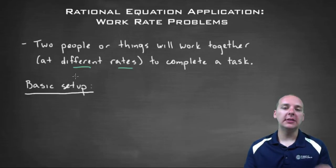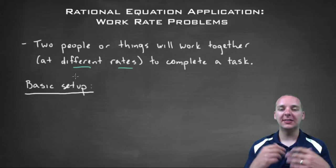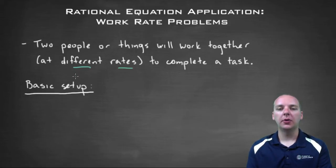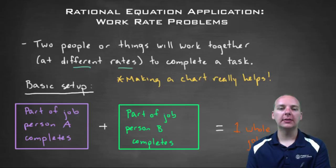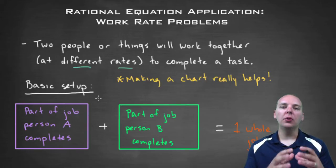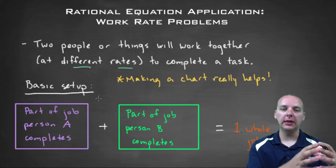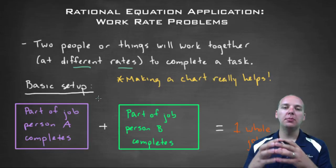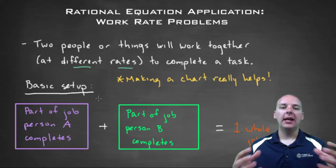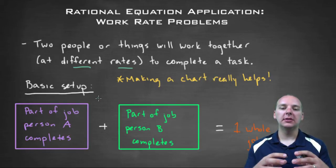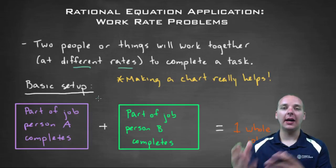So the good news is, even though there's a wide variety of scenarios for these work rate problems, the setup is basically the same for all of these. So let's talk about that, and then we'll do an example. So the basic setup looks something like this, you're going to figure out what portion of the job person A could complete, and what portion of the job person B is going to complete. And then when you add those two portions together, you should have completed the entire job, which will be one whole job.